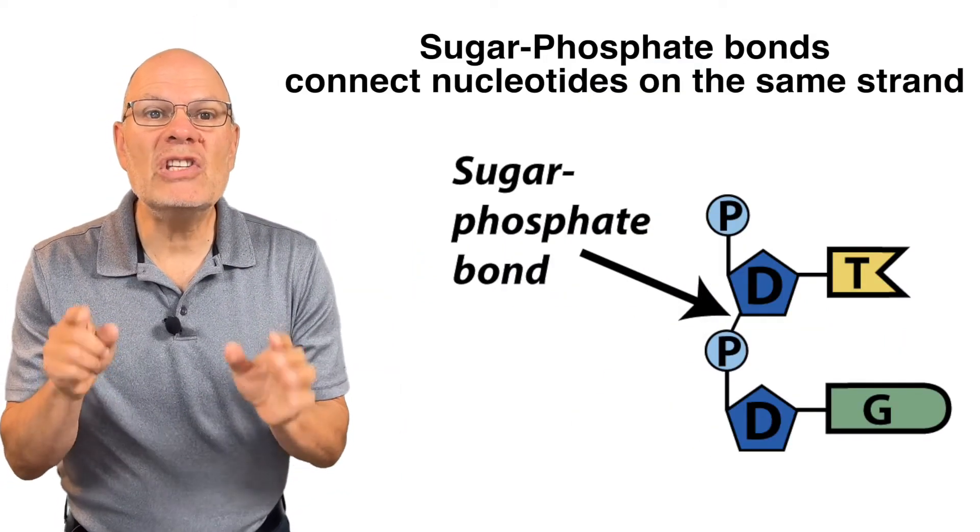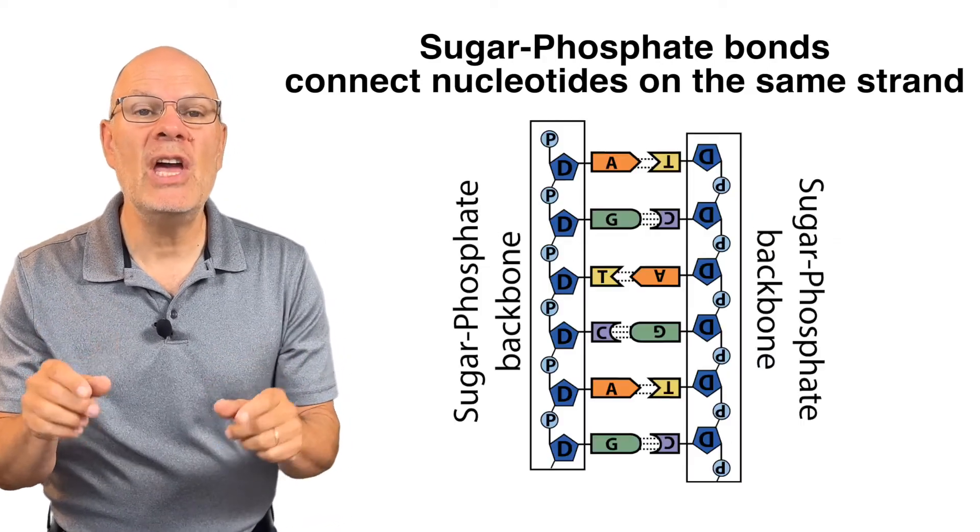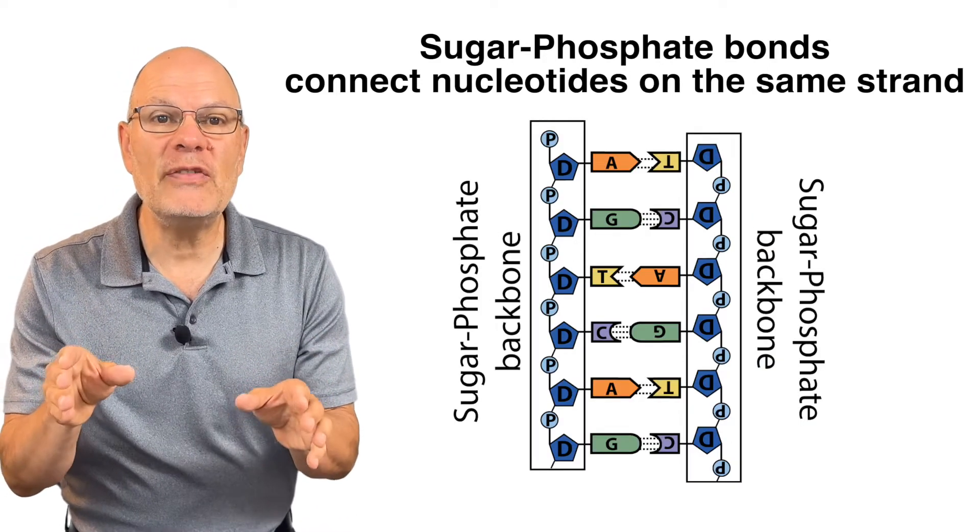Five, each strand is held together by covalent sugar-phosphate bonds between adjacent nucleotides. This creates a sugar-phosphate backbone.